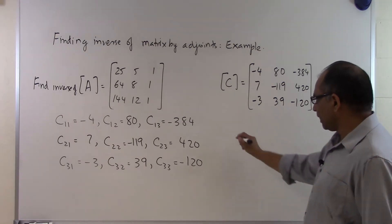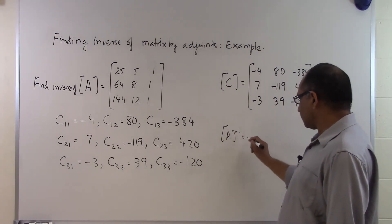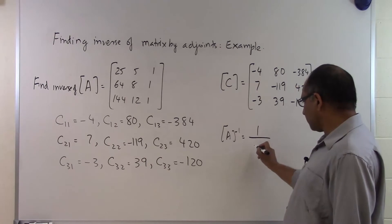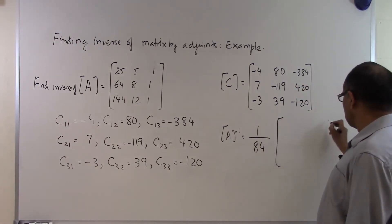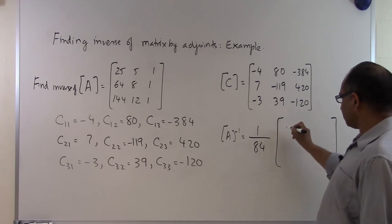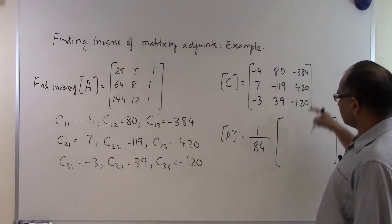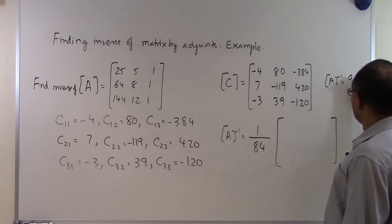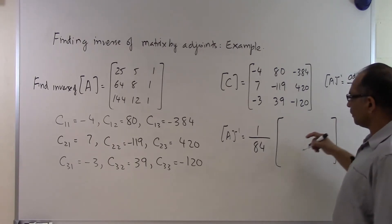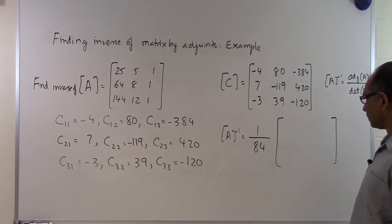In order to find out the inverse of the matrix, all I have to do is divide 1 by the determinant of the matrix, which is 84, times the transpose of this matrix. A inverse is the adjoint of A divided by the determinant of A. And the adjoint of A is nothing but the transpose of the cofactor matrix.